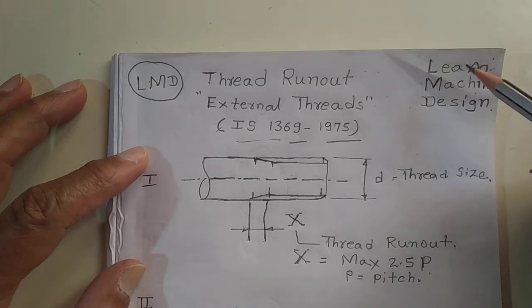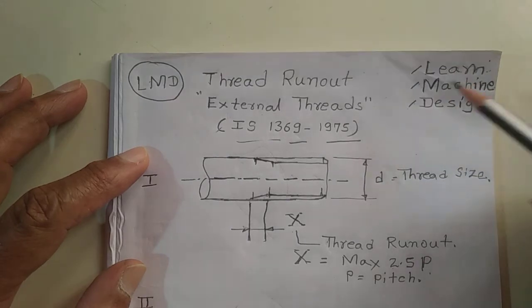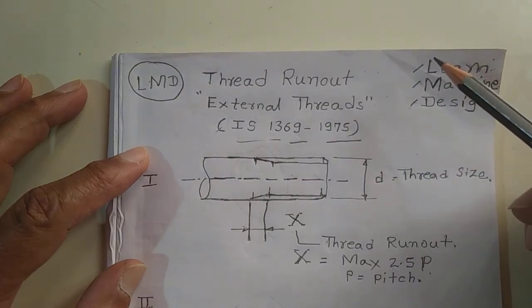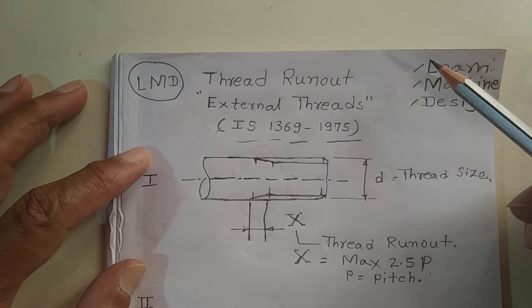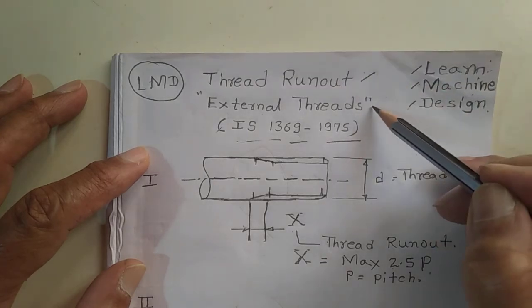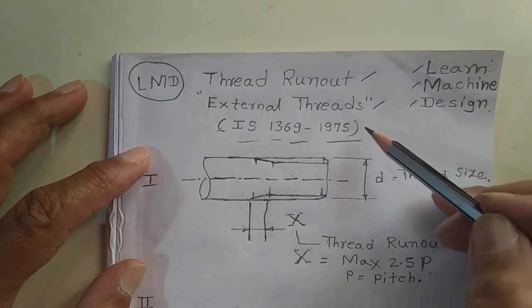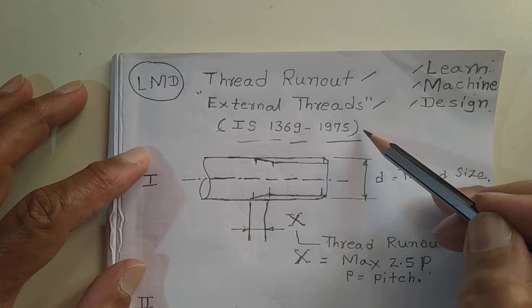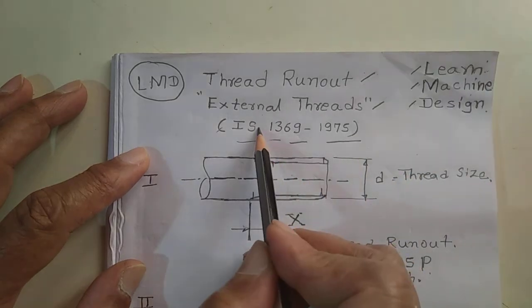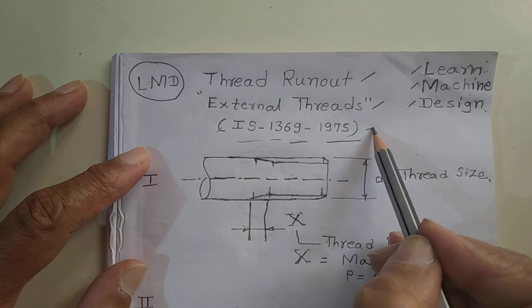Welcome to my channel Learn Machine Design. We will discuss in this session Thread Runout on External Threads. This should be maintained as per IS Standard 1369-1975.